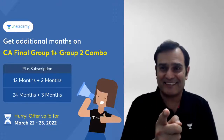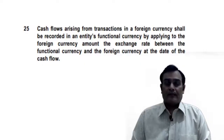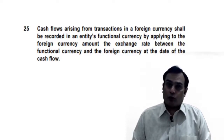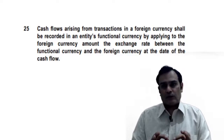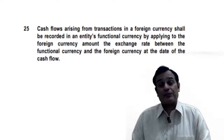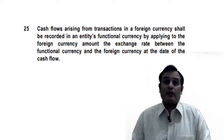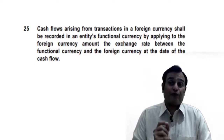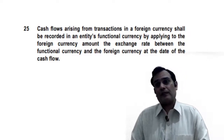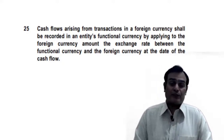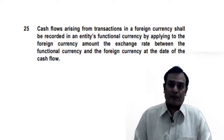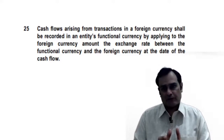There is paragraph number 25 which I quote: cash flows arising from transactions in a foreign currency shall be recorded in the entity's functional currency by applying to the foreign currency amount the exchange rate between the functional currency and the foreign currency at the date of the cash flow.